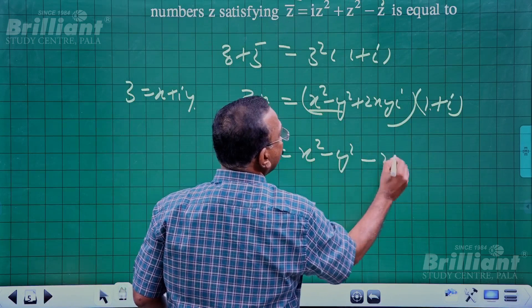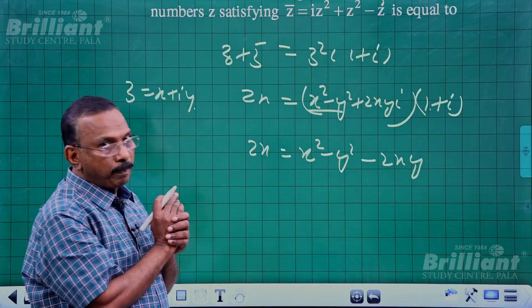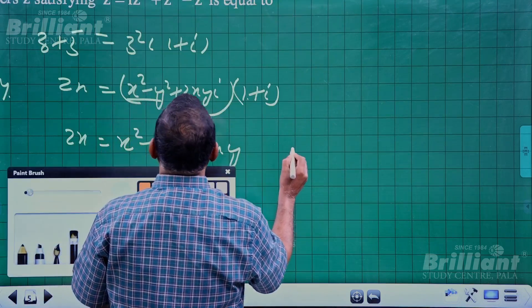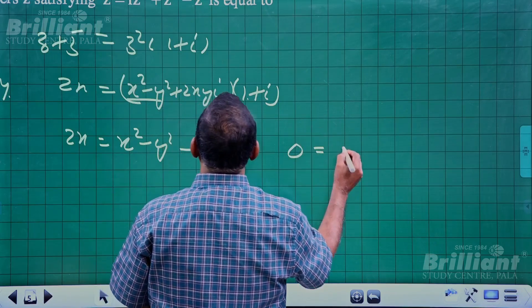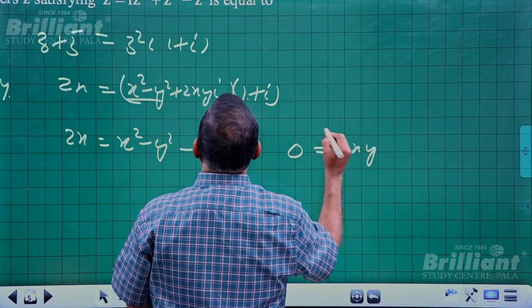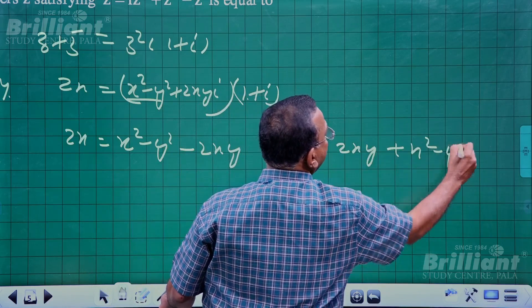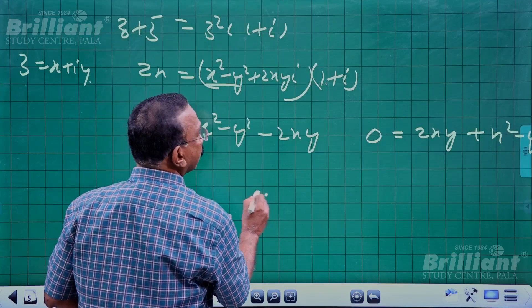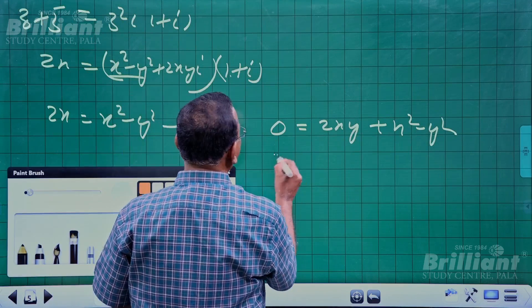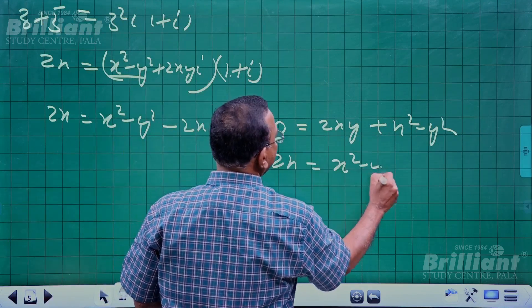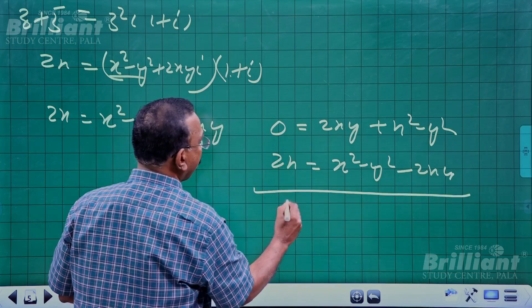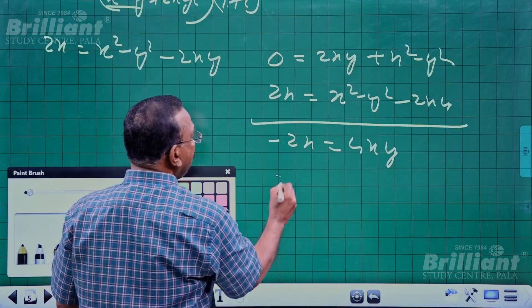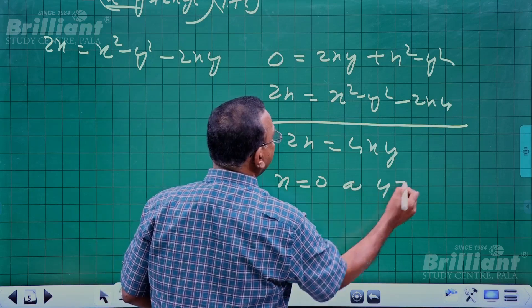The imaginary part gives 0 = 2xy + x² - y². Subtracting the two equations yields -2x = 4xy, which implies x = 0 or y = -1/2.